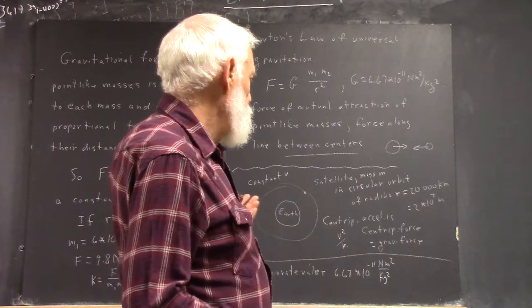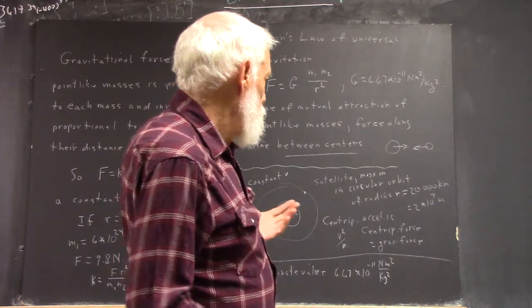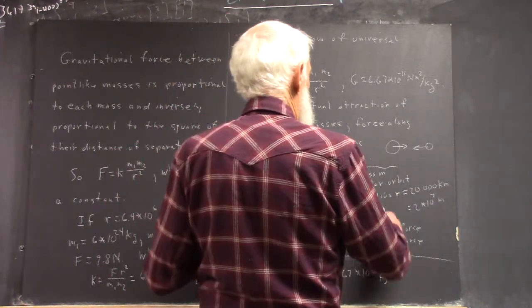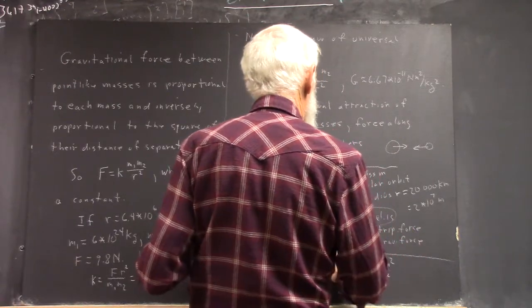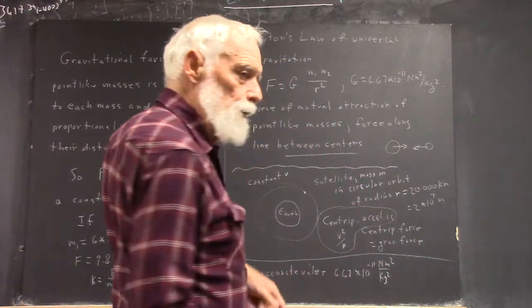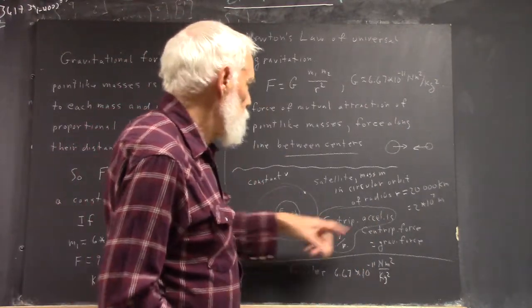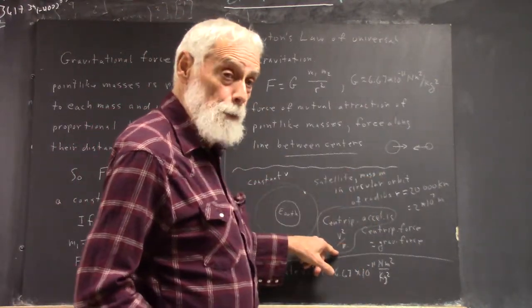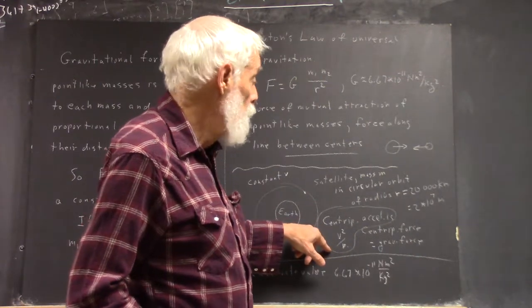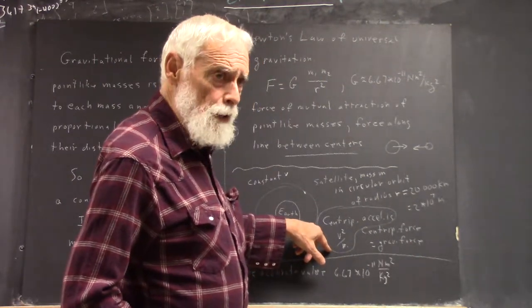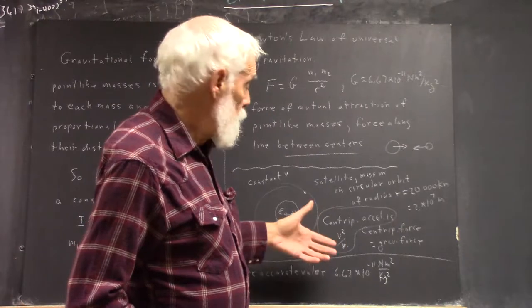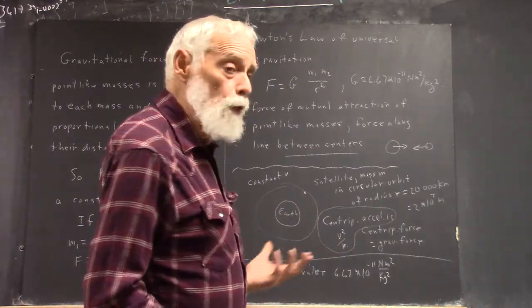Centripetal acceleration is V squared over R. Where does the acceleration come from? There has to be a force, a centripetal force. And people say, oh, the centripetal force is going to be the mass times the centripetal acceleration, M V squared over R. That's right. Where does that come from? Where are you going to get an M V squared over R force?